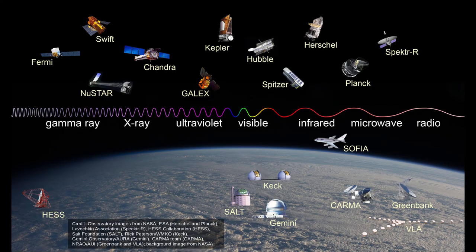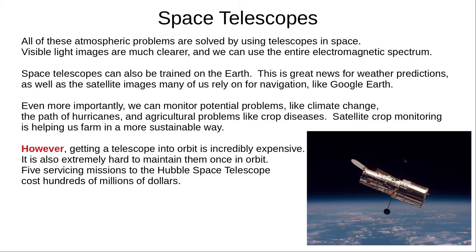Here we can see a selection of the most well-known telescopes. As you can see, almost all of them are in space, particularly for wavelengths shorter than visible light, on the left. Of course, all of these atmospheric problems are solved by putting our telescopes in space. Visible light images are much clearer, and we can observe the entire electromagnetic spectrum.